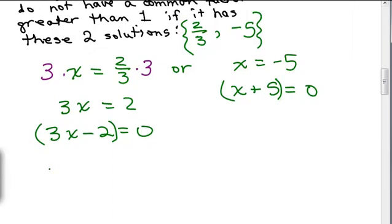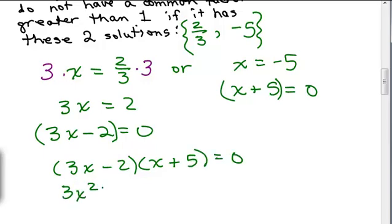So those must have been the two factors. So then we just multiply those together. 3x minus 2 times x plus 5 equals 0. So that gives me 3x squared. Outer term is plus 15x, inner term is minus 2x, that's plus 13x, minus 10 equals 0, and we did it. We found an equation.